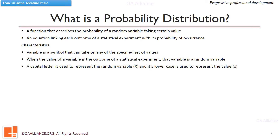A capital letter is used to represent the random variable and its lower case is used to represent the value. For example, small x is a value of the random variable capital X. P(x) is the probability of X. Probability of capital X equals small x refers to the probability of the random variable X taking a particular value.